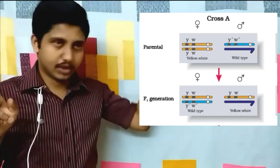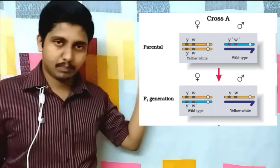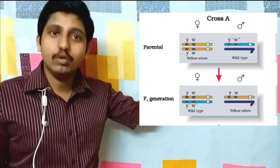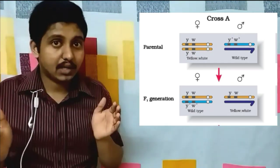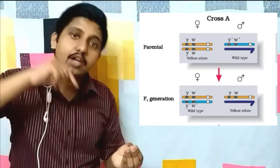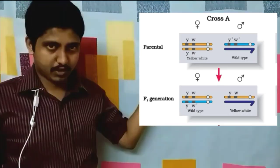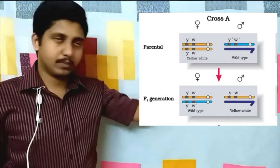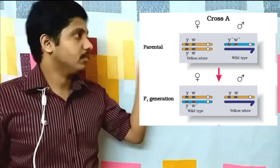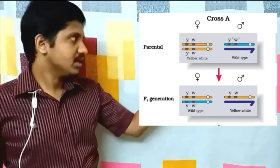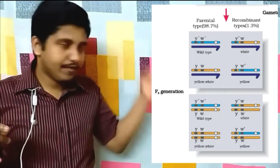From the cross, he got the F1 progeny: a Y⁺W and YW⁺ female, as well as a YW male. The body color and eye color genes were known to be present on the X chromosome. He then intercrossed the F1 progeny — the heterozygous wild-type female with the homozygous male obtained from the first cross.